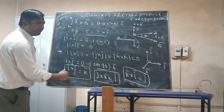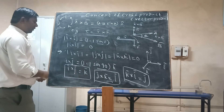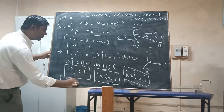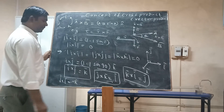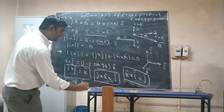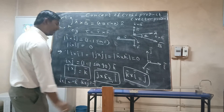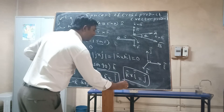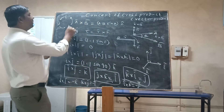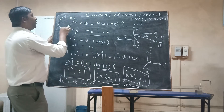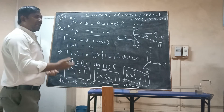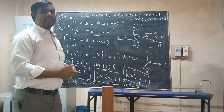If you reverse the order of the cross product, you get a negative result. So ĵ × î = −k̂, k̂ × ĵ = −î, and î × k̂ = −ĵ. This is the anti-commutative property of cross products — swapping the two vectors introduces a negative sign. If you follow this concept carefully, you will understand cross products well.